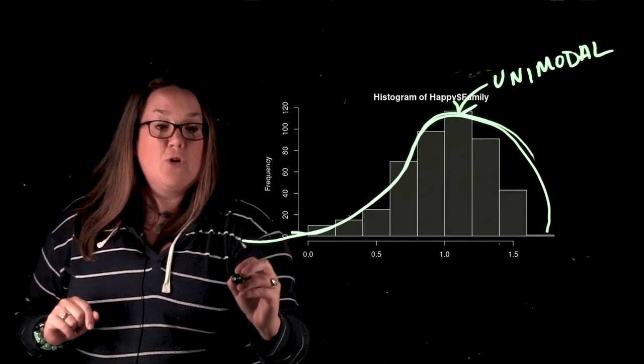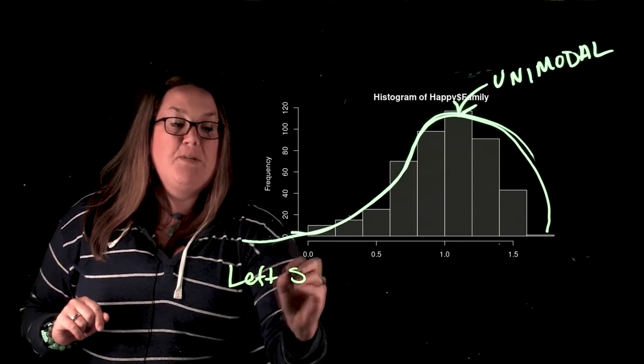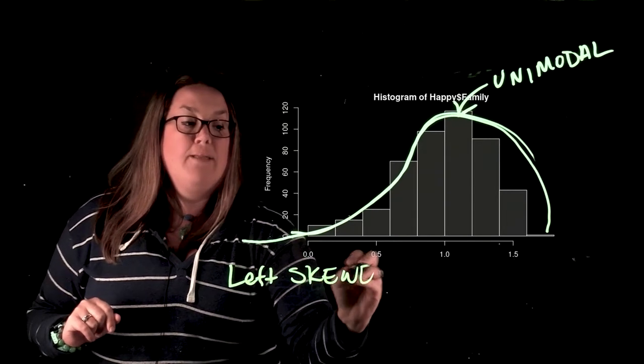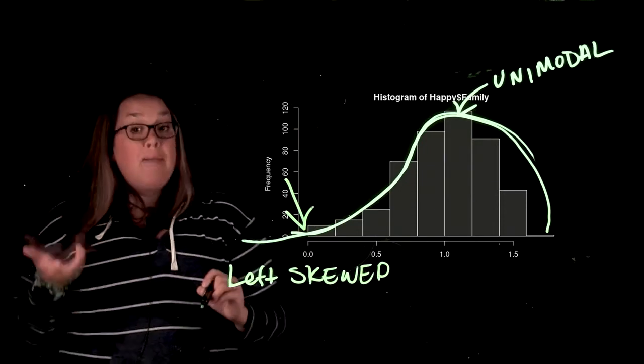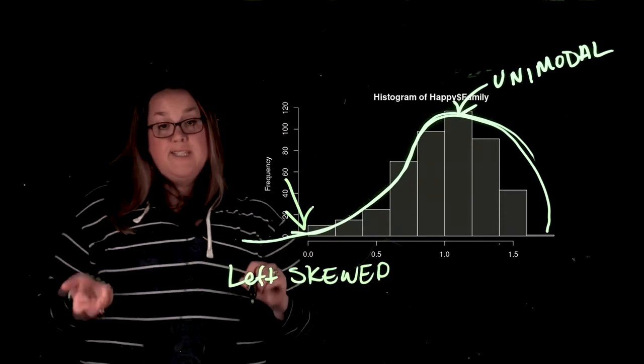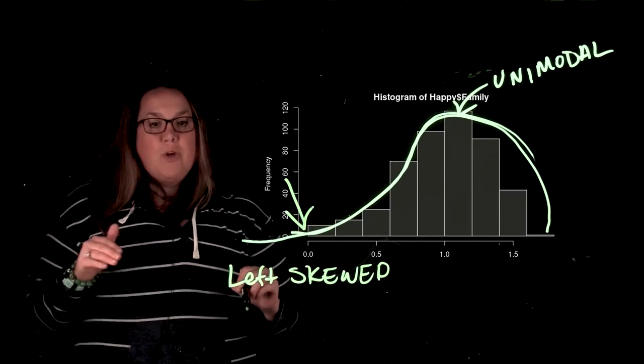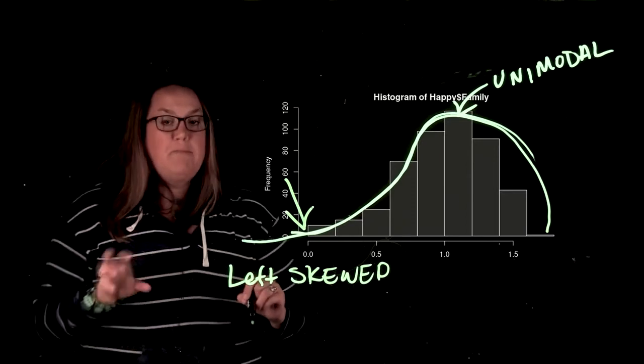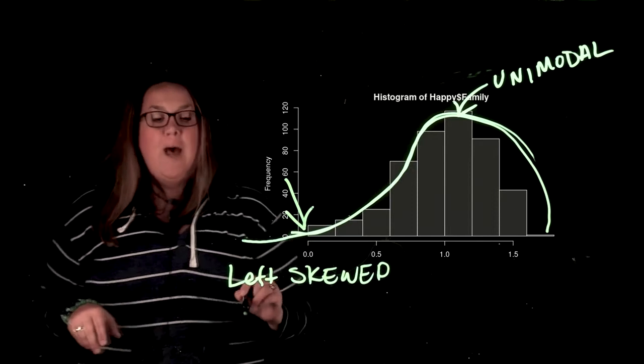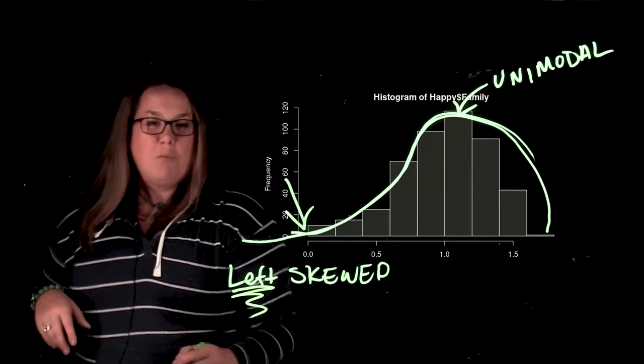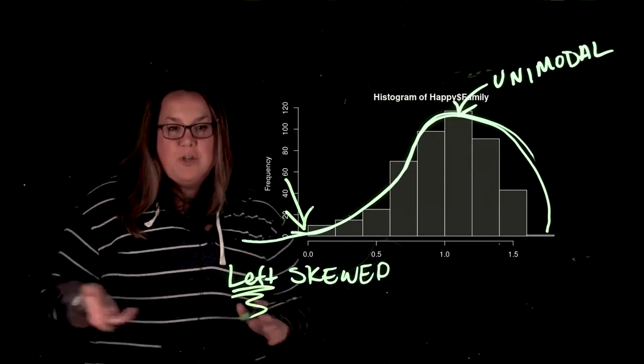So I would describe this as having a skew to it. Specifically, it would be called left-skewed because this is the left-hand side and that's where the drag or the skewness is happening. Sometimes people would call this negatively skewed because it's on the negative or lower side of the distribution, but I think that left-skewed is more intuitive because that's the direction of the skewness.